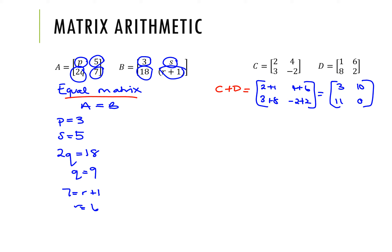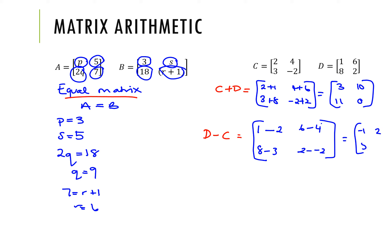For subtraction, D minus C: we take each element of D and subtract the same position in C. So one minus two, six minus four, eight minus three, and two minus negative two — remember that becomes a plus. That gives us negative one, two, five, and four. Importantly, to add or subtract matrices they must be of the same size — the same order. They must both be, in this case, two by two matrices. BODMAS also applies with matrices: brackets first, then multiplication, then addition and subtraction.